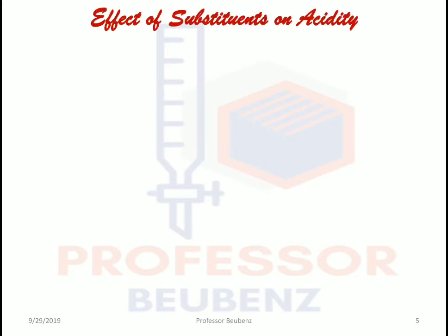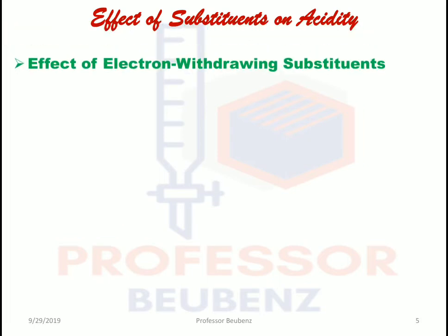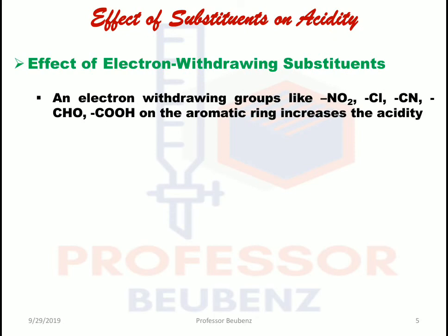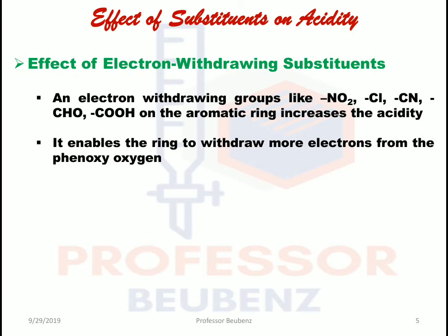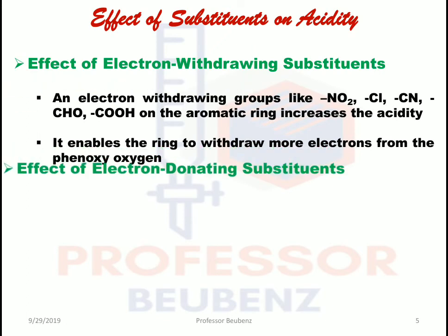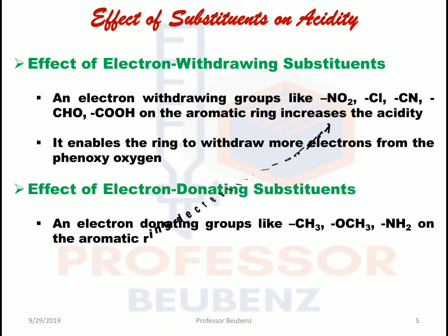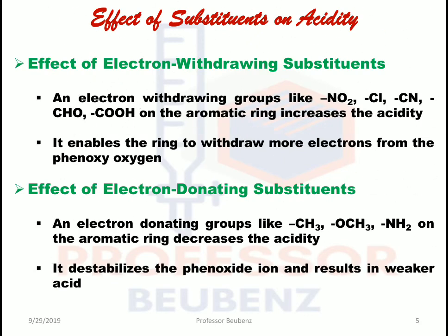Now, regarding the effect of substituents on acidity of phenols, there are two types: electron-withdrawing and electron-donating. Electron-withdrawing groups such as NO2, Cl, CN, CHO, and carboxylic acid on the aromatic ring increase the acidity, because they enable the ring to withdraw more electrons from the phenoxy oxygen. Electron-donating groups such as CH3, OCH3, and NH2 on the aromatic ring decrease the acidity of phenol.